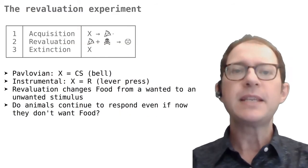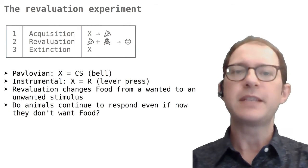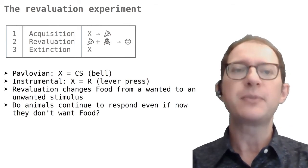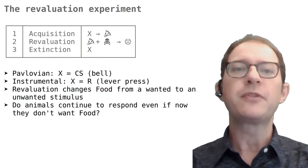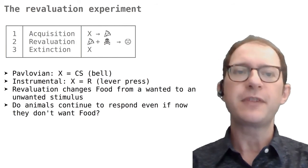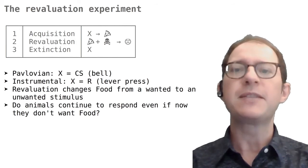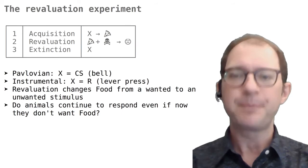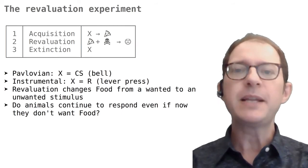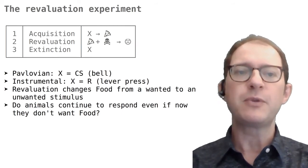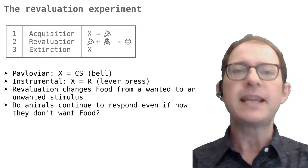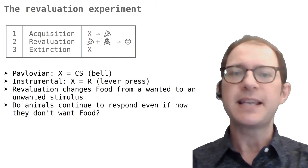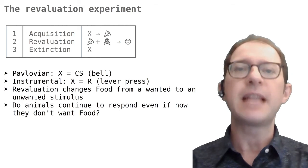Let's now see how we can tell what kind of associations are established in Pavlovian and instrumental conditioning. The key empirical tool for this investigation has been a kind of experiment known as the revaluation experiment. I will explain this experiment using food as the reward and a toxin that makes the animal sick as a punishment. Other possibilities exist, and we will see other examples in the coming slides.